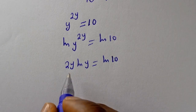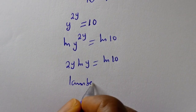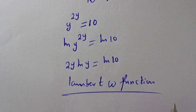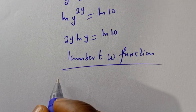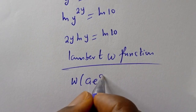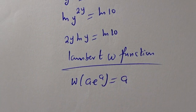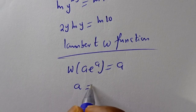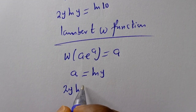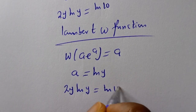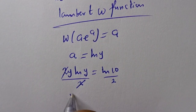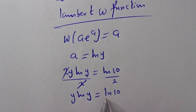From here we can introduce Lambert's W function. That is, w of a times e raised to power a is equal to a. From this equation, a is equal to natural log of y. We have the equation 2y ln of y is equal to ln of 10. Let's divide both sides by 2. Now we have y times ln of y is equal to ln of 10 over 2.